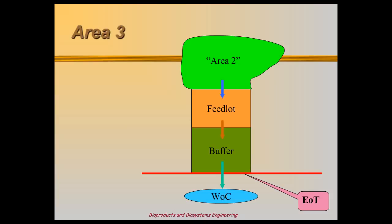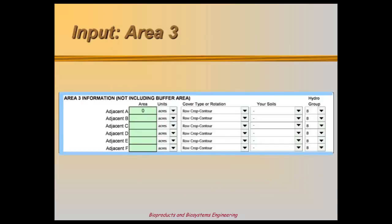Water that runs across the buffer without first crossing the feedlot comes from Area 3. This is clean water that can dilute runoff and help reduce pollution potential. At the same time, water from Area 3 can inundate the buffer to the point of saturation, reducing infiltration and subsequent treatment. This is why engineered buffer designs divert as much clean water as possible away from the treatment area. To determine the impact from Area 3, enter the same info required for the buffer and Area 2. A feedlot with no buffer will have no Area 3.